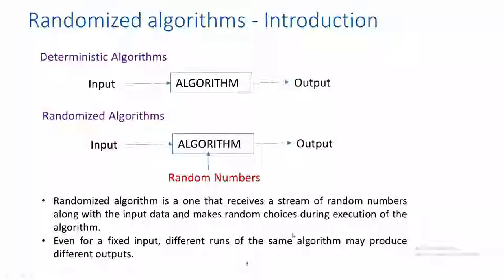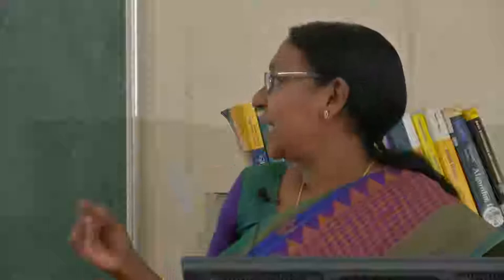So what is a randomized algorithm? A randomized algorithm is one that receives a stream of random numbers along with the input data and makes random choices during execution. Which step is to be executed is decided by the random number — the behavior of the algorithm is totally controlled by the random numbers. So even for a fixed input, different runs of the same algorithm may produce different output.